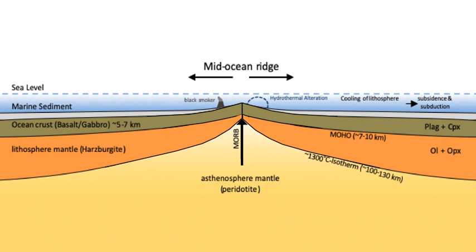A mid-ocean ridge is a seafloor mountain system formed by plate tectonics. It typically has a depth of approximately 2,600 meters and rises about 2 kilometers above the deepest portion of an ocean basin. This feature is where seafloor spreading takes place at a divergent plate boundary. The rate of seafloor spreading determines the morphology of the crest of the mid-ocean ridge and its width in an ocean basin.